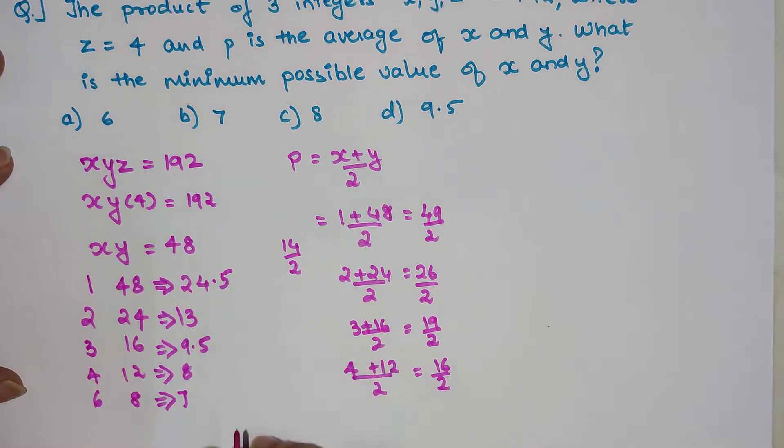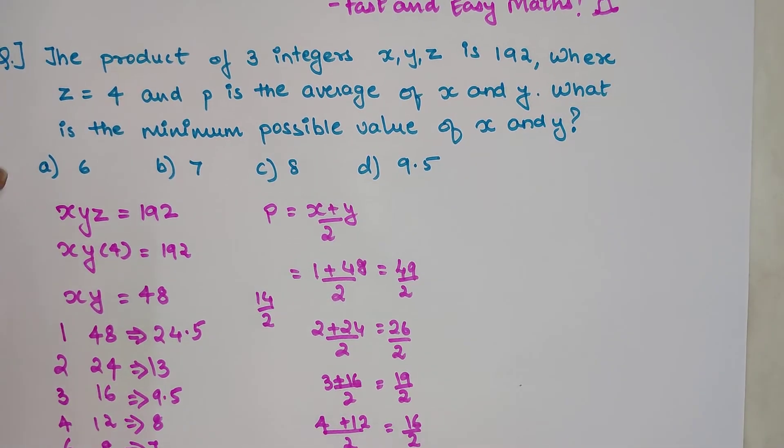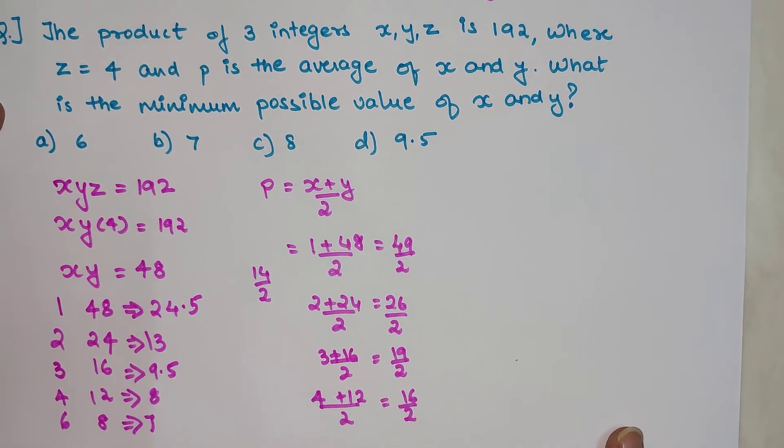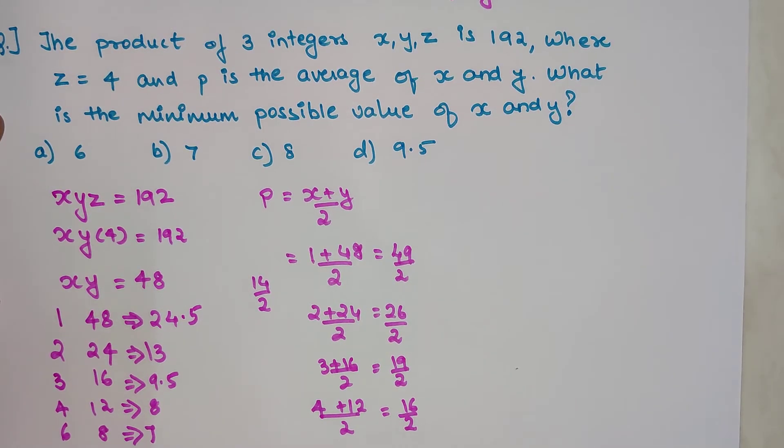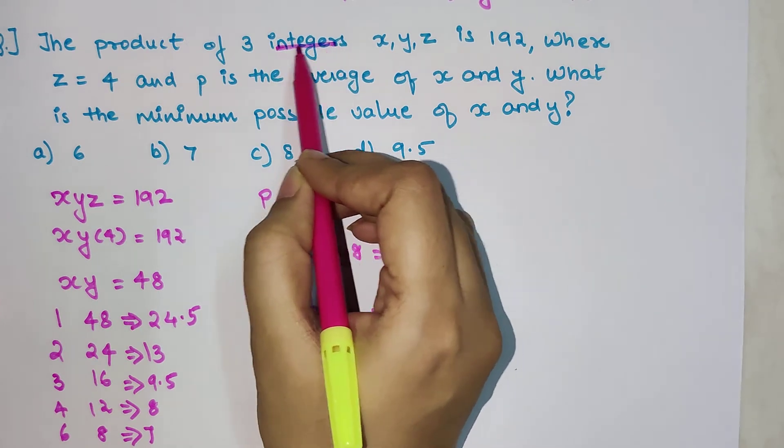So according to our workings, 7 is the right answer and 7 is also available in the options. Then why did I say that none of the students could mark the correct answer?